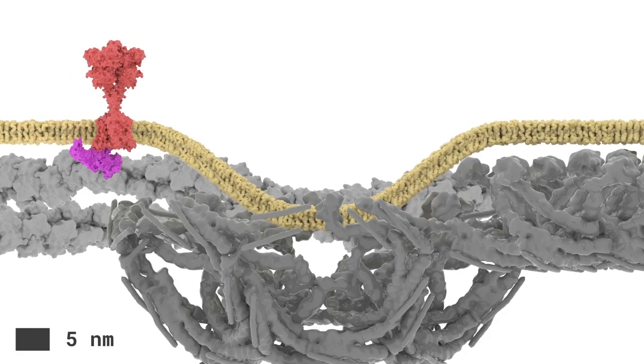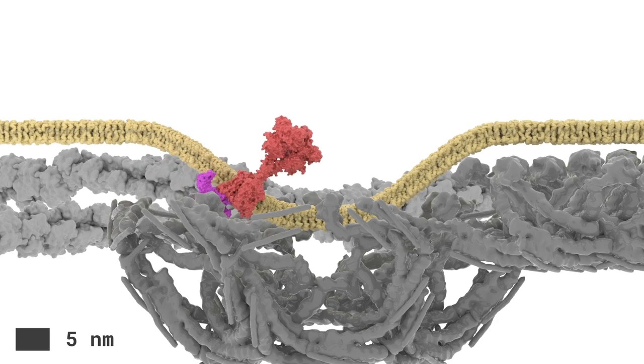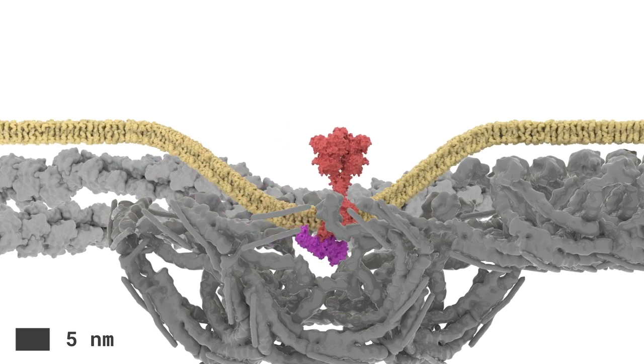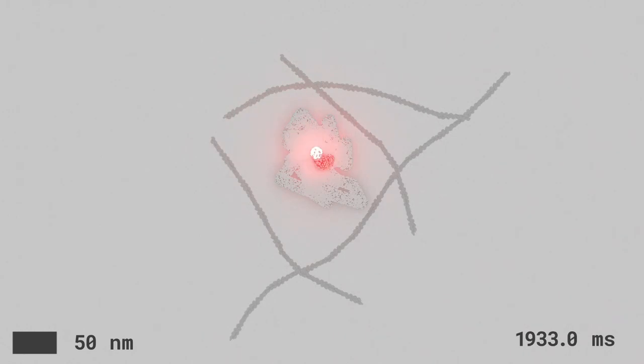Arrestin binding causes the GPCR to become immobilized within a clathrin-coated pit, where the diffusion mode transitions from confinement to restriction.